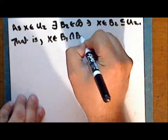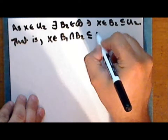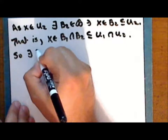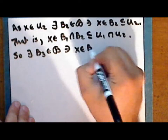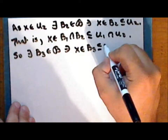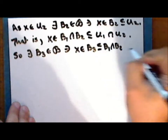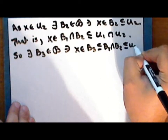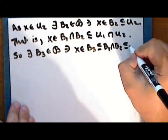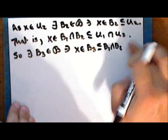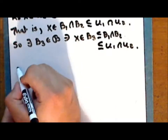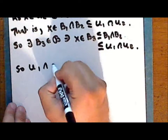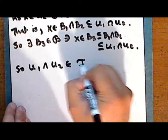Similarly, there exist elements B_1 and B_2 in script B with x in their intersection, and B_1 ∩ B_2 is a subset of U_1 ∩ U_2. So there exists a third element B_3 in script B such that x is in B_3, which is a subset of B_1 ∩ B_2, which is a subset of U_1 ∩ U_2. Thus the intersection of any two elements in τ is also in τ.